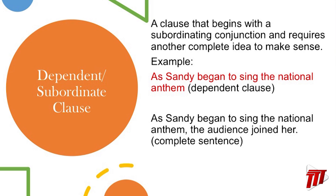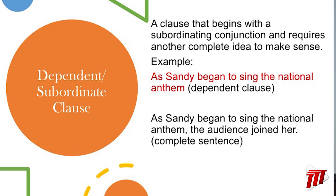Let's look at this clause: "As Sandy began to sing the national anthem" — that is definitely a dependent clause. What's happening after she sings? We don't know, so this clause needs something else to make it make sense. Now look at the complete sentence: "As Sandy began to sing the national anthem, the audience joined in." This is a complete sentence — we have the dependent clause "as Sandy began to sing the national anthem" and then the rest of the sentence telling us what happened. That is a dependent, or subordinating, clause.